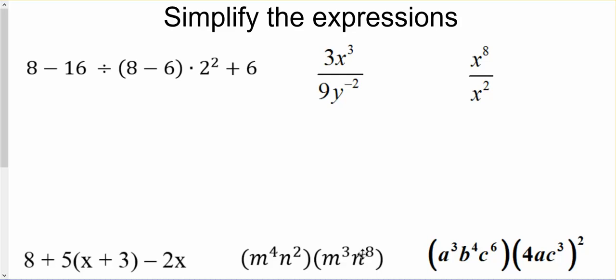This is the warm-up. We want to simplify the expressions, so we look at the first one, and we can simplify from within the parentheses. 8 minus 6, so we've got 8 minus 16 divided by 2 times 2 squared plus 6.